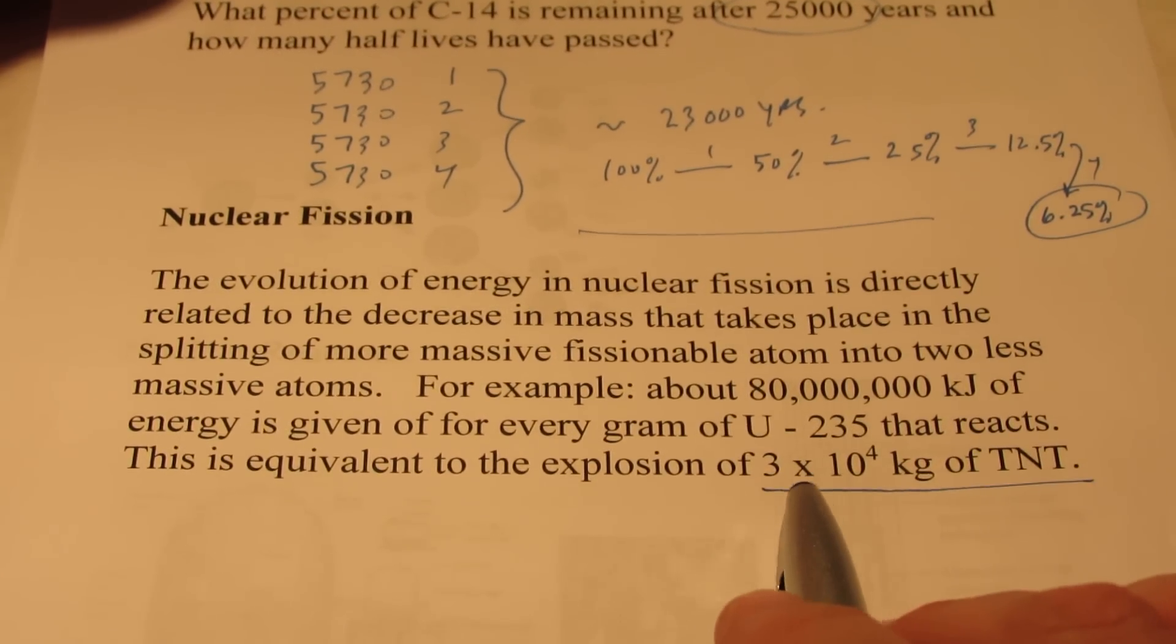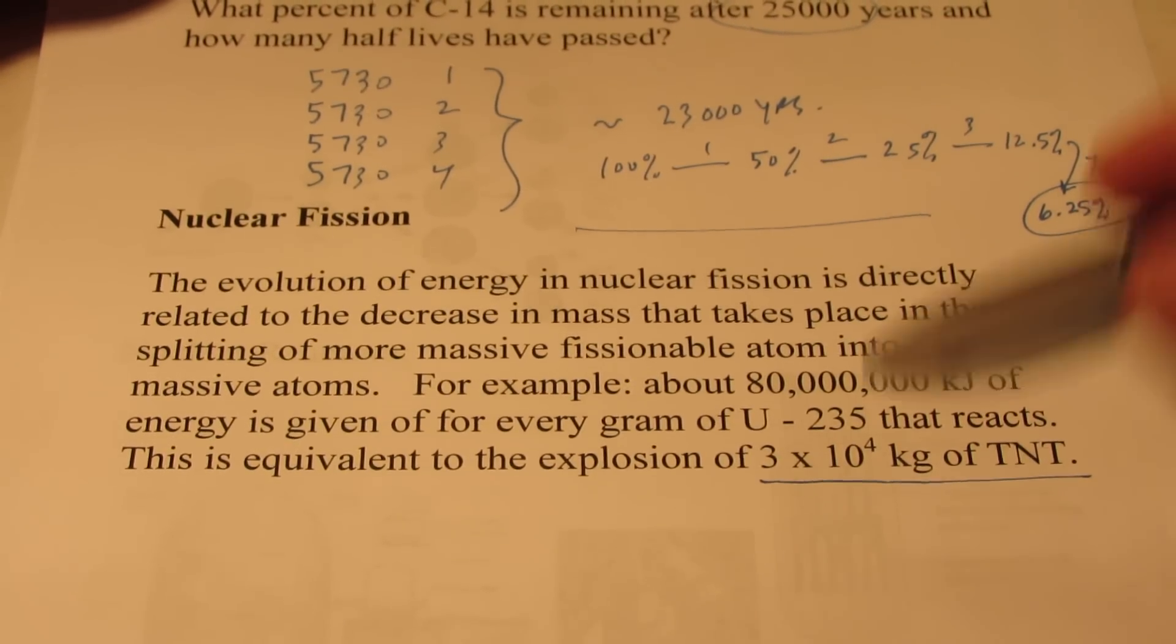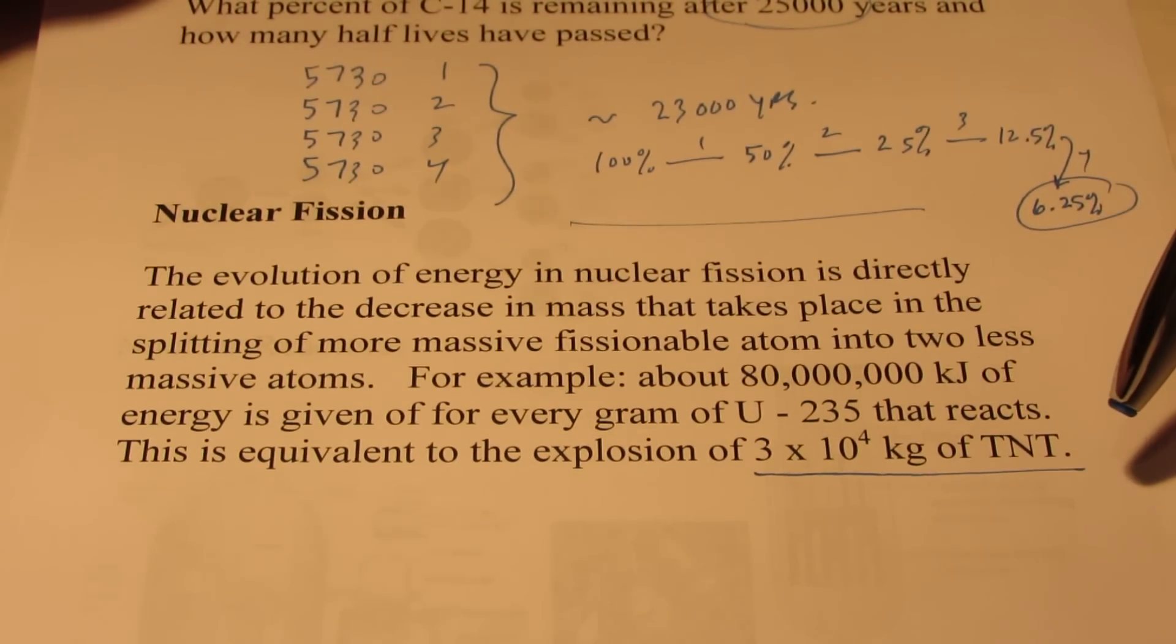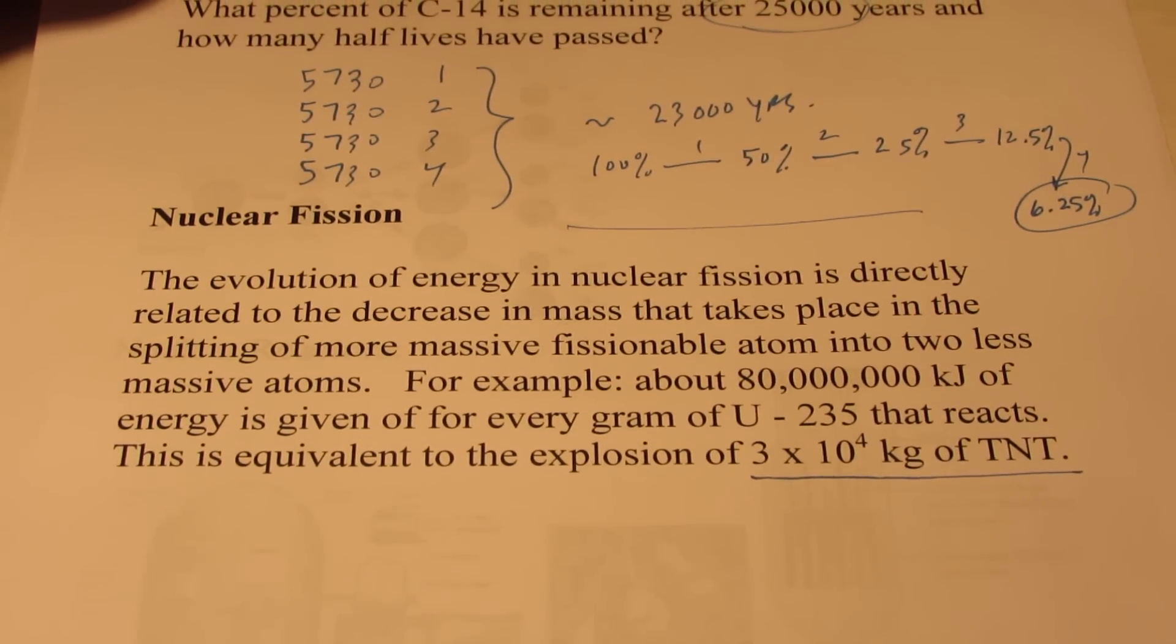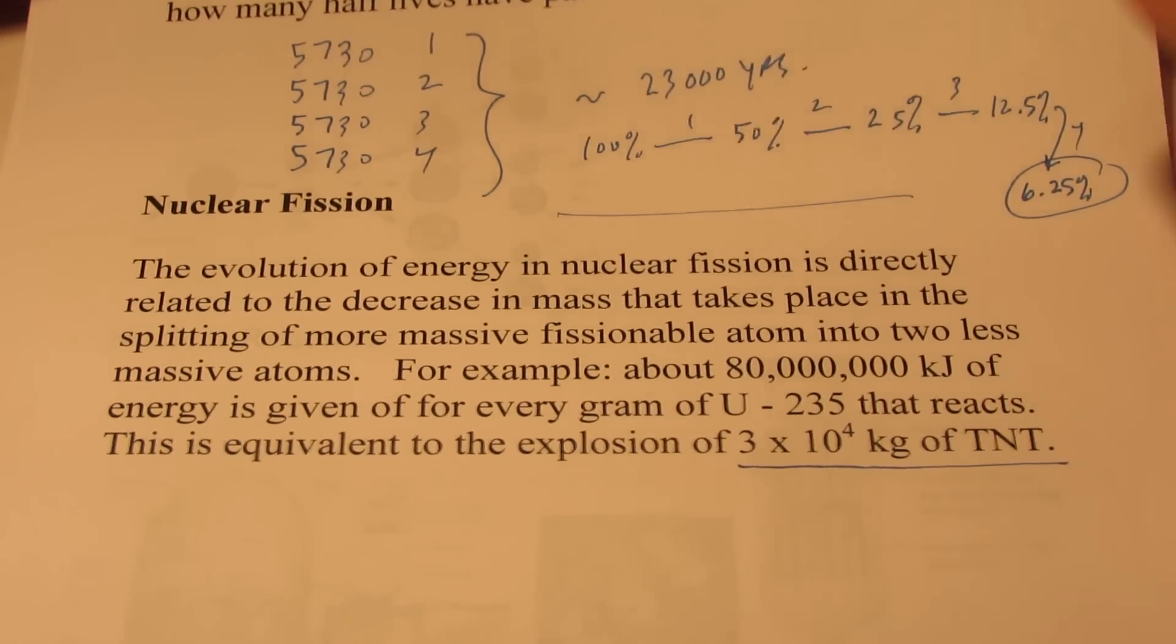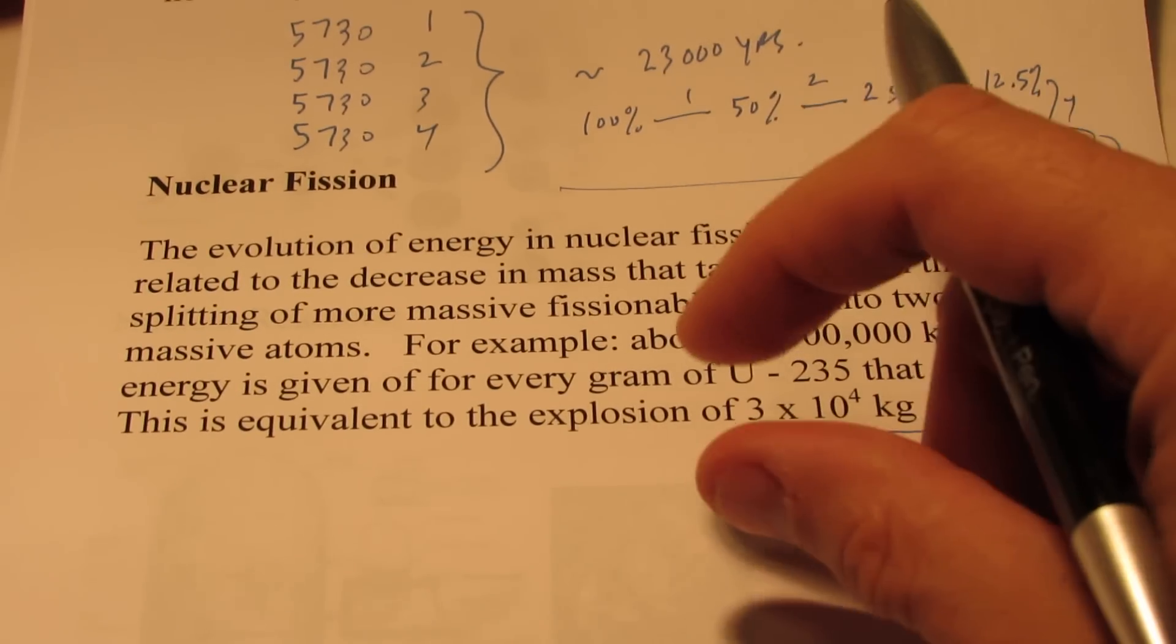And that's equivalent to about 30,000 kilograms of TNT, which is about 30 or so tons of TNT - a tremendous amount of energy for a very small mass.